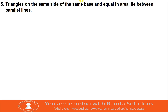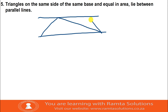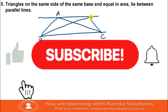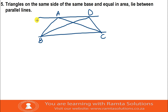The fifth condition we're looking at is: triangles on the same side of the same base and equal in area lie between parallel lines. This time we're not going to be given parallel lines - we must prove that they are indeed parallel. Let's say we have triangles with points A, B, C and D. We will call the height of triangle ABC height H1, and the height of triangle DBC height H2.